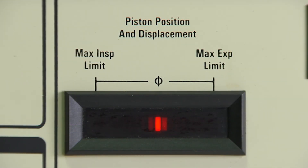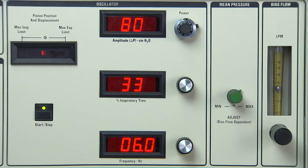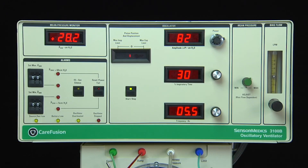The piston position and displacement indicator provides the operator with information on the position of the piston relative to its mechanical limits and the control settings. The 3100B features auto-centering and thus requires no intervention by the operator to maintain piston centering.